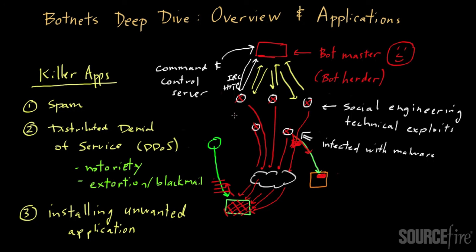Another application instead of adware is installing fake antivirus or fake anti-malware software onto a system. This type of software might erroneously tell the user they are infected with malware and that they need to pay money to have it removed. In real life, the only malware in question is the malware that compromised the system in the first place, but a user might not know that and may think that by paying money they'll get the compromise removed. Any type of unwanted application is big business - sometimes called pay-per-install. Bot masters will rent out their botnets to people who pay to have nefarious software installed on systems so they can profit from that software being there.